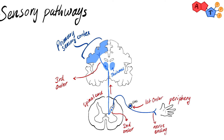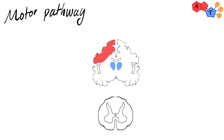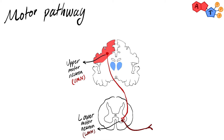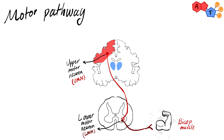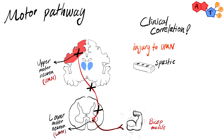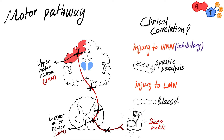In descending or motor tracts, we consider upper motor neurons and lower motor neurons instead of first, second, and third order neurons. Upper motor neurons travel from higher motor centers of the brain to the anterior horn of the spinal cord or the nuclei of the cranial nerves, synapsing there. Lower motor neurons arise from the same place to supply the end organ — for example your biceps. Injury to upper motor neurons results in spastic paralysis because upper motor neurons have a net inhibitory effect, so losing them removes this effect. Lower motor neuron injury results in flaccid paralysis, since the muscle will no longer receive electrical impulses telling it to contract.